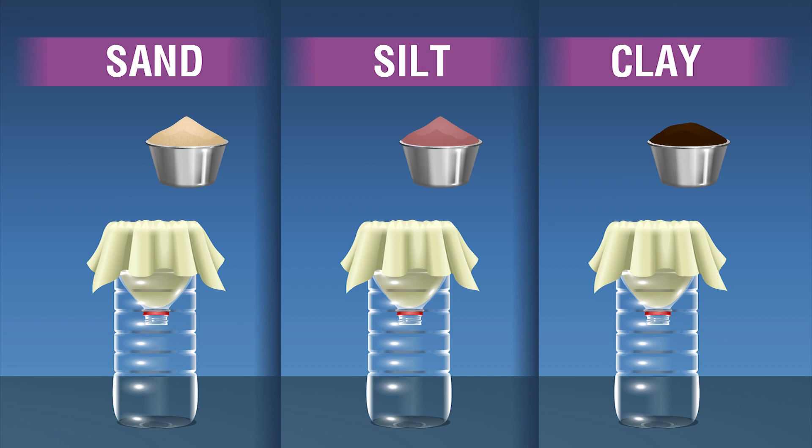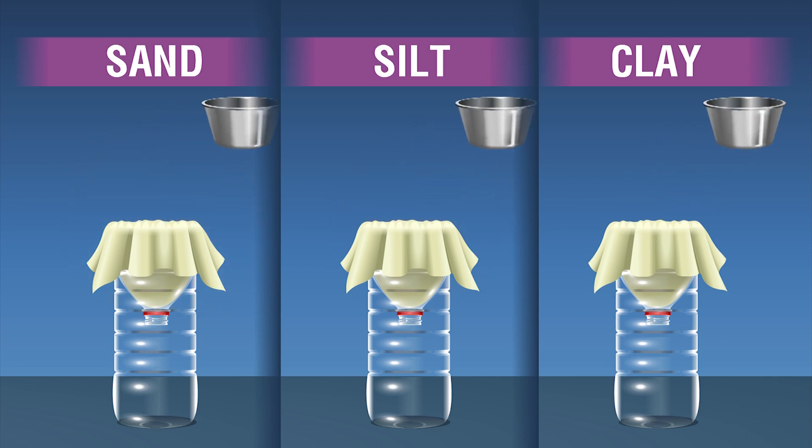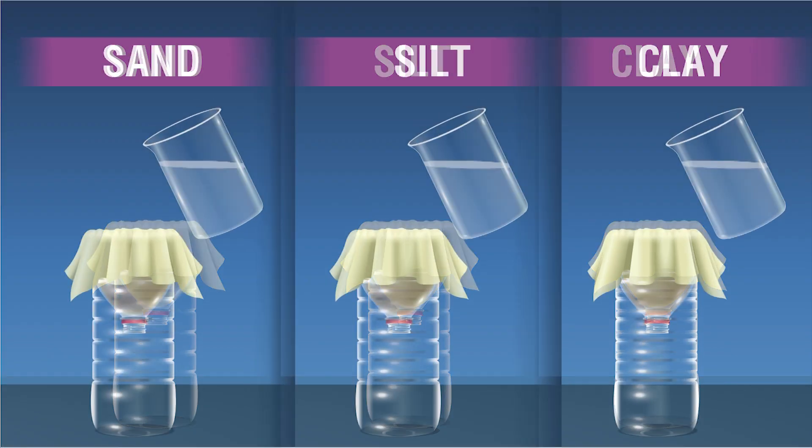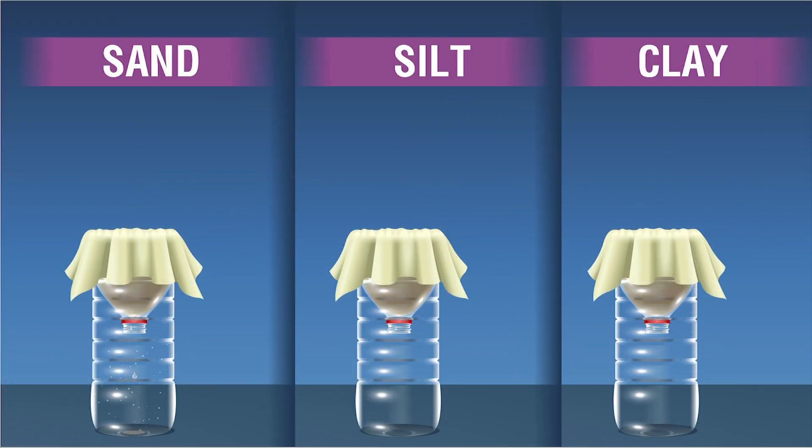You can also try to do the experiment using different types of soil and observe the change. The speed at which water flows through the soil depends on the particle size of the soil sample.